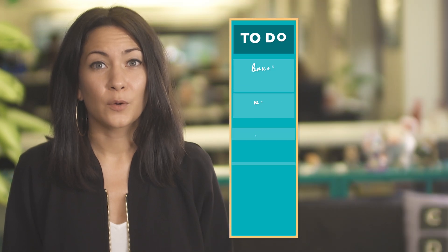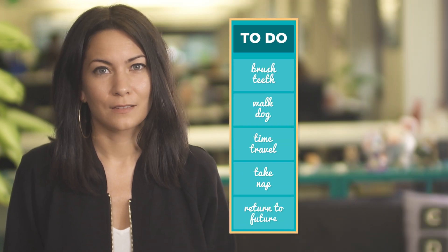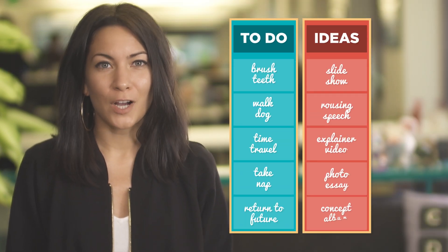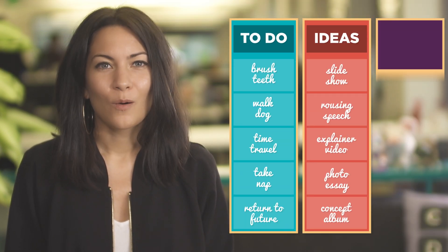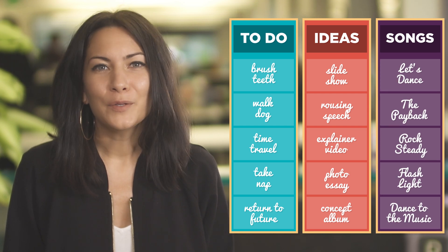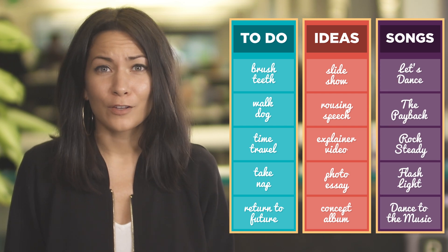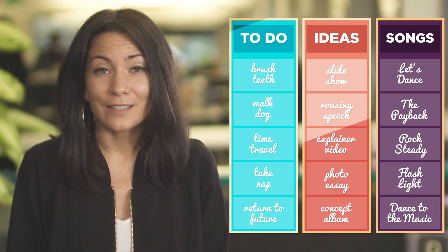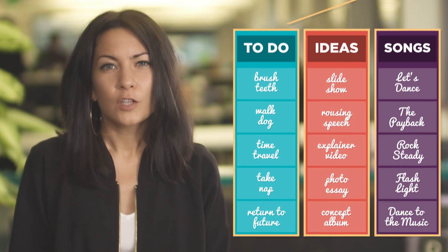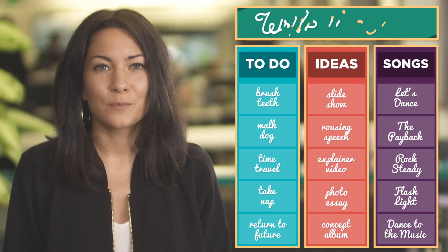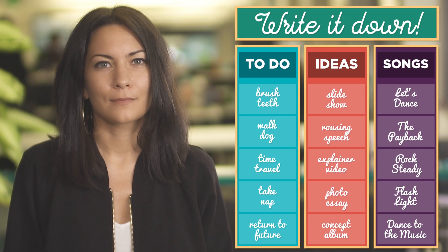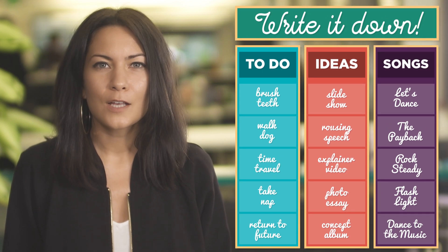When you're planning out your day, brainstorming ideas for a project, or choosing songs for a party, how do you keep track of all your activities, ideas, or songs? You probably write them down in a list. Lists help us stay organized by ordering all the relevant pieces of information one after the other in a single place.